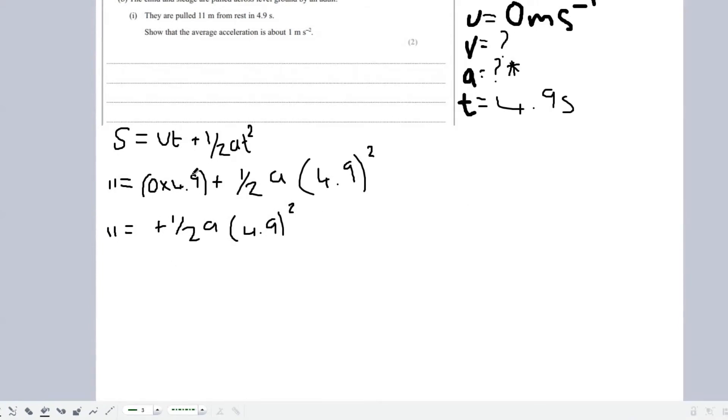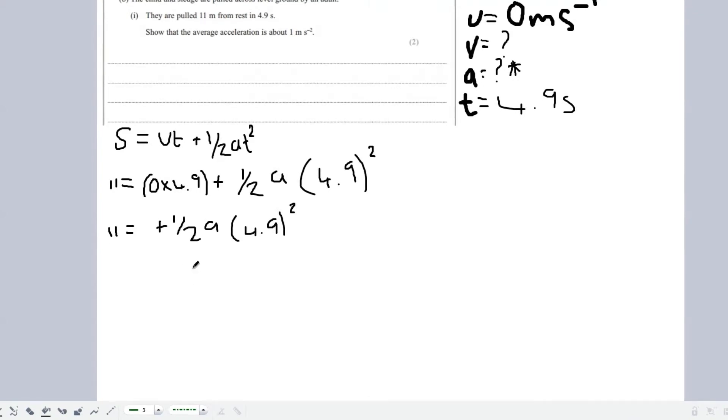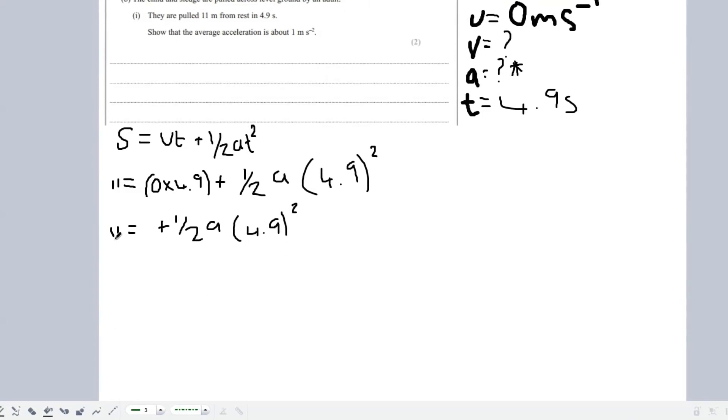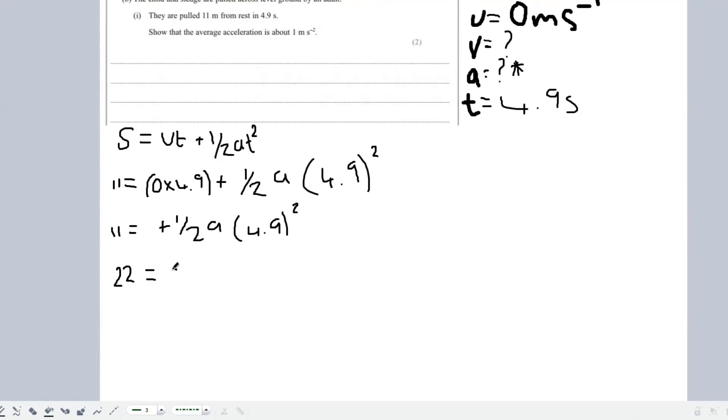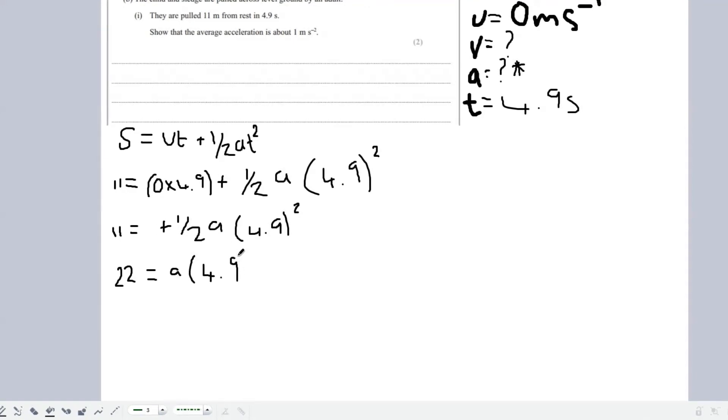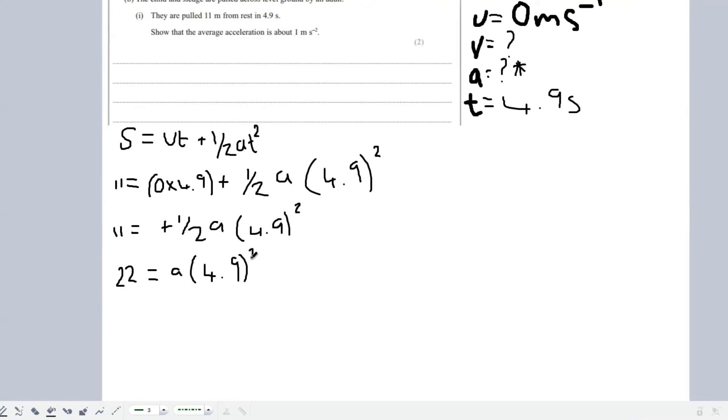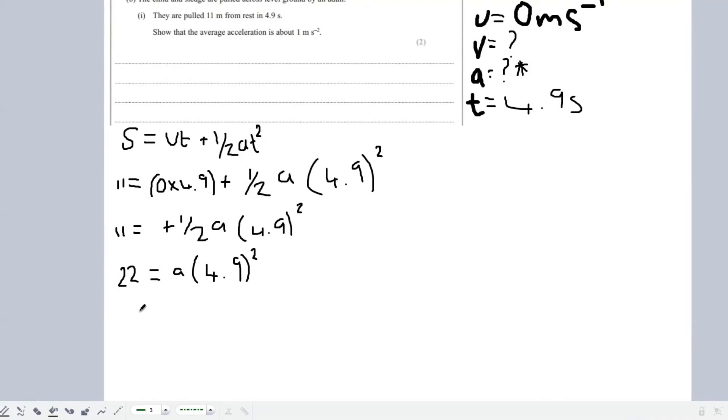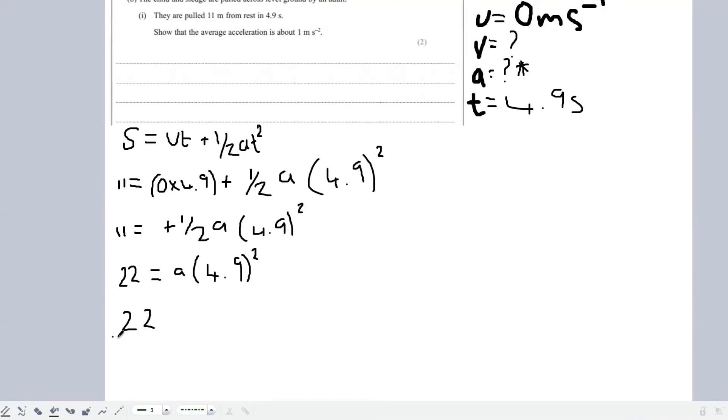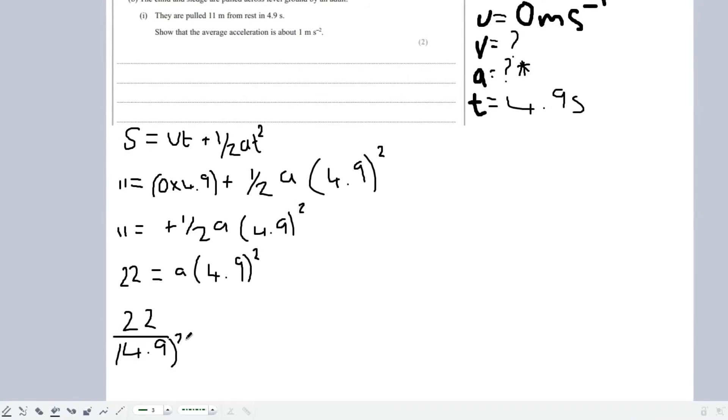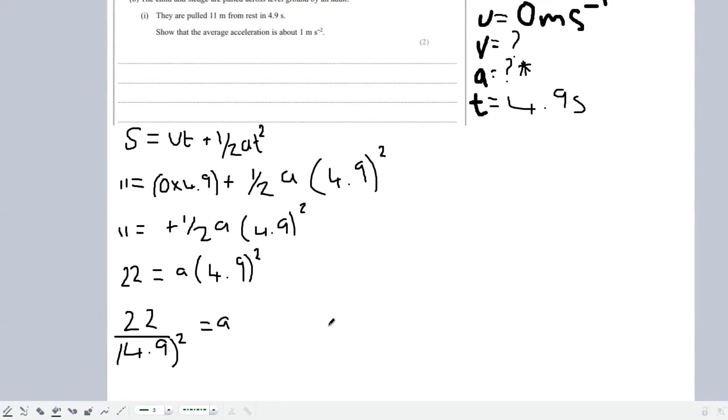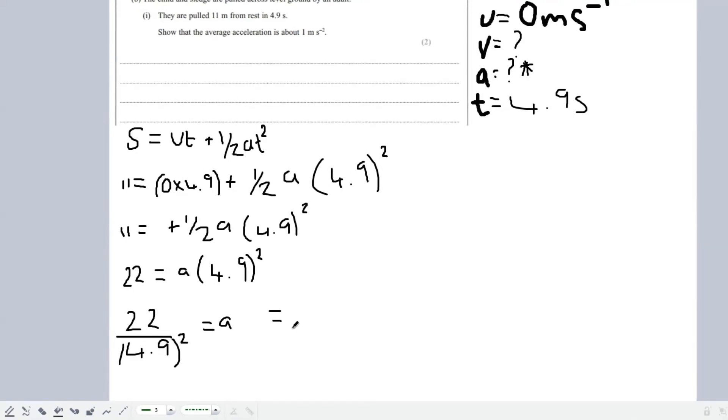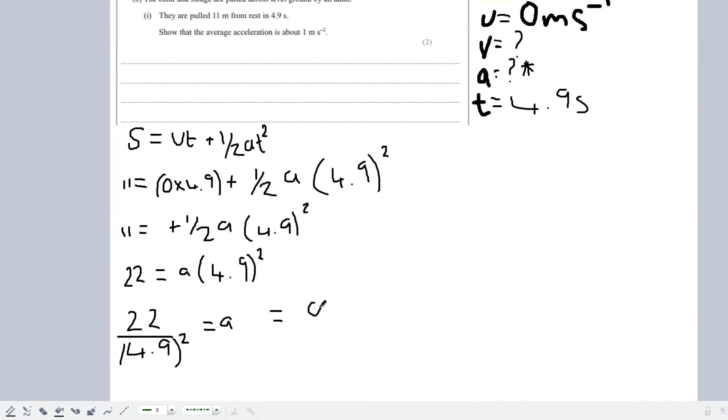I'm sure those of you familiar with mathematics will be able to rearrange this. What we want to try and do is get rid of this half here. So we'll times both sides by 2, and that leaves us with 22 is equal to A times 4.9 squared. Now, we just want A. So we're going to divide both sides by 4.9 squared. That leaves us with 22 over 4.9 squared is equal to A. If you tap that into a calculator, we should get a value for A, something along the lines of 0.916.